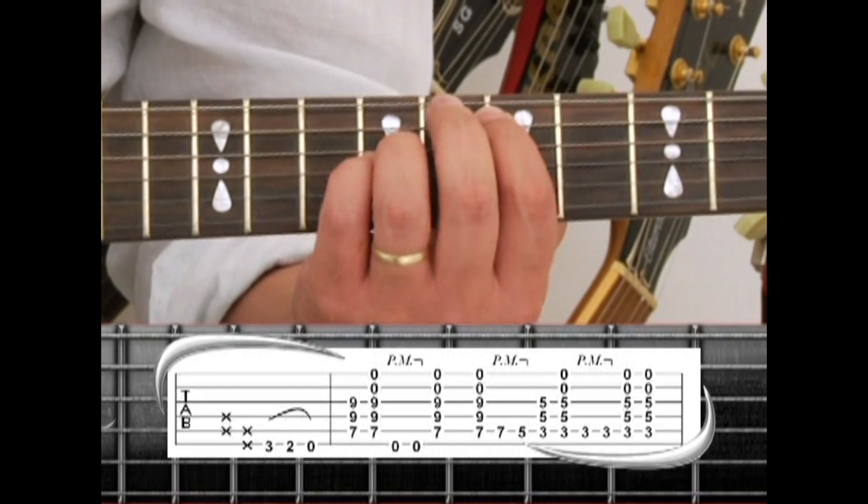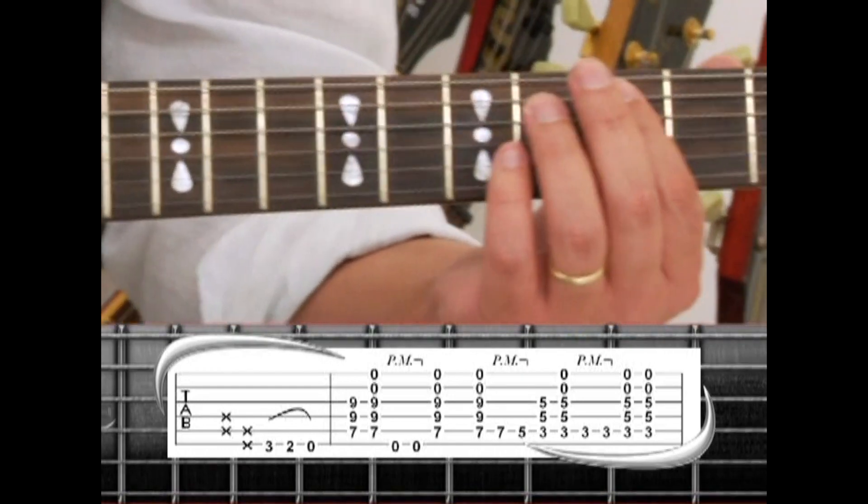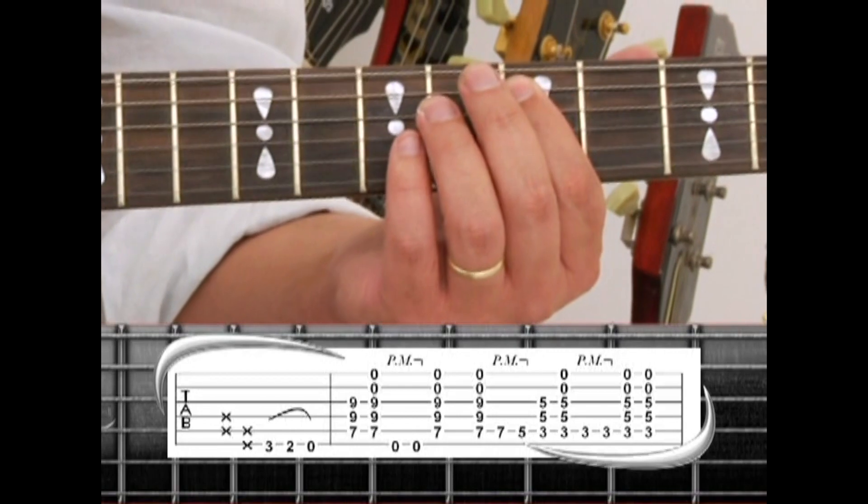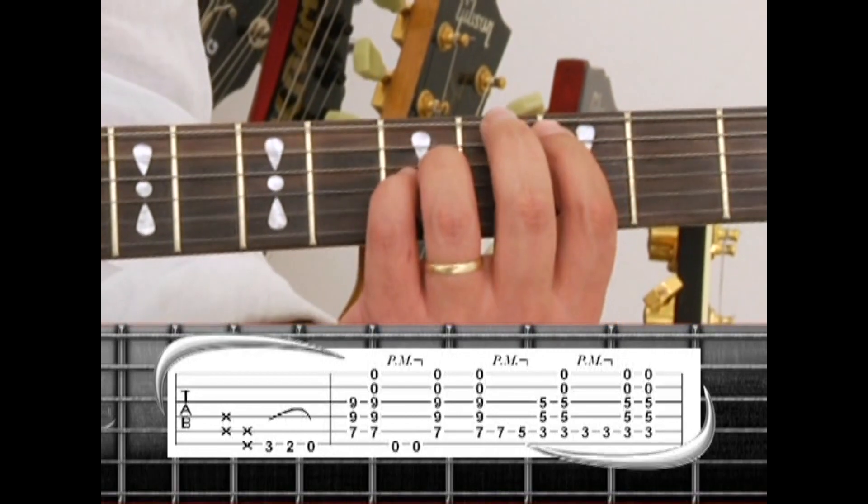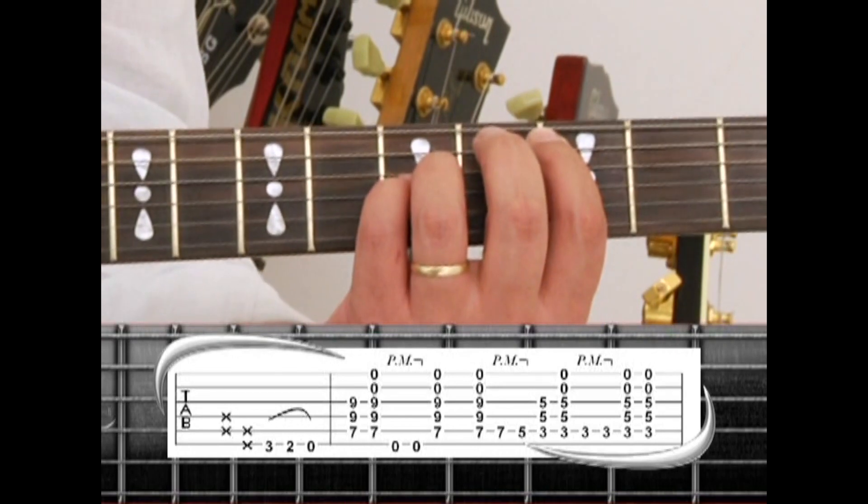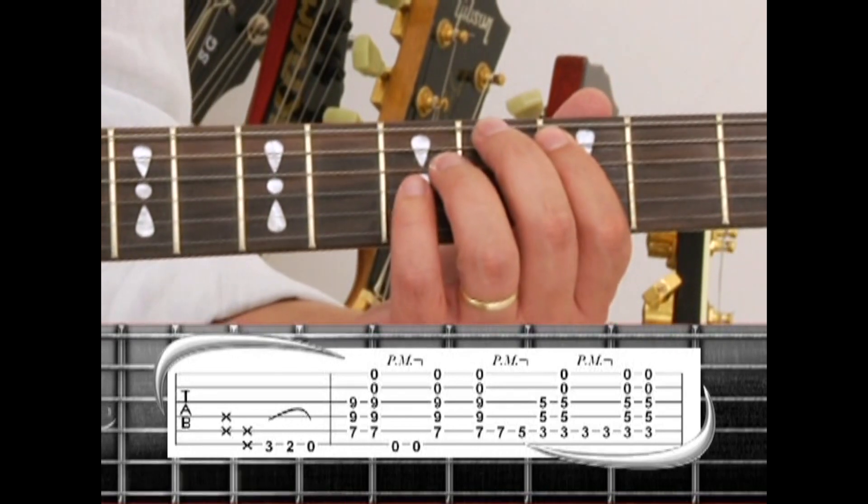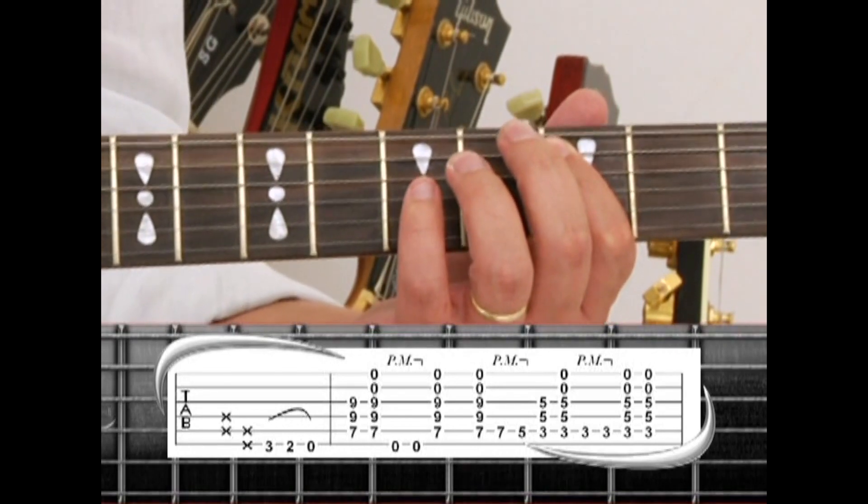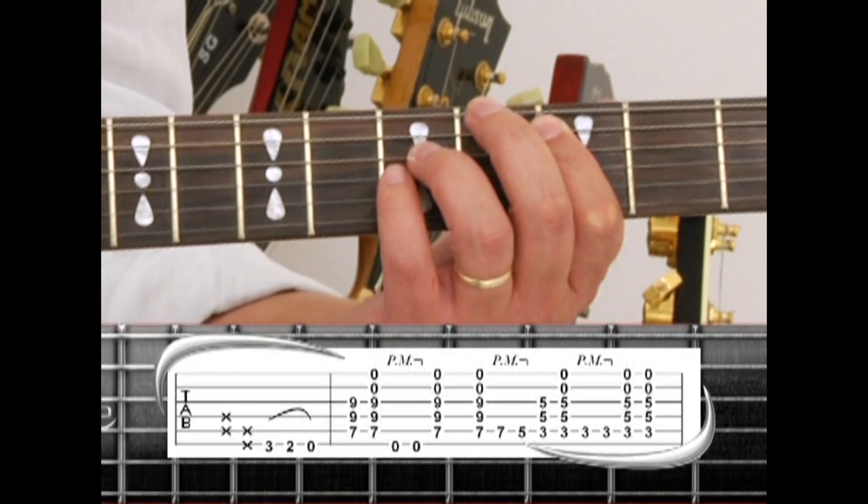Palm mute the 5th string 7, then drop down to C5, then C5 drone. Palm mute the 5th string 3rd fret twice, that's a C note. Palm mute the 5th string 8, then 2 more C5 drones.